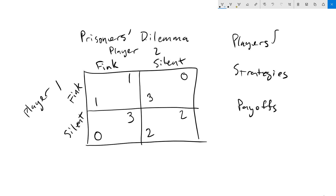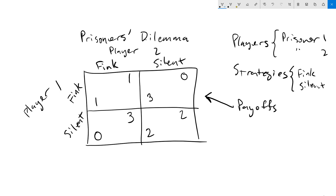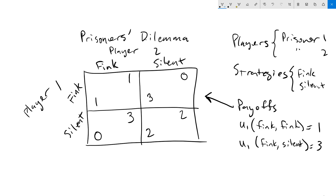How does this all fit into our game theory framework? Our players are prisoner one and two. Our strategies are going to be some combination of fink and silent. That's not to say that fink and silent are the only possible strategies — they could have contingencies, for example, if the other one finks I'm going to fink, if they stay silent I'm going to stay silent. We can build up more complex strategies, but they're always going to come from those building blocks of fink and silent. Finally, the payoffs are given by our matrix. For example, the utility for player one for fink-fink is one, and player one's utility from fink-silent is three, and so on. We refer to this matrix as a normal form game.